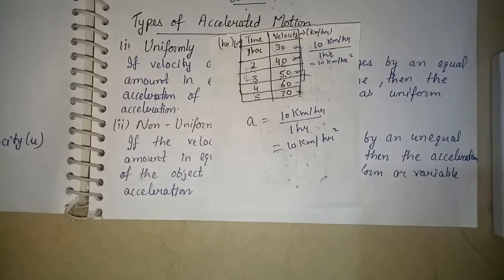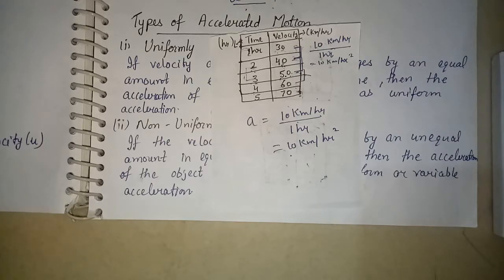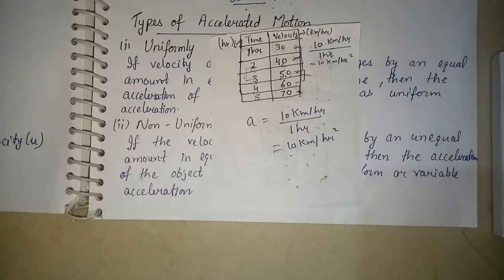So students, we have seen that this body is changing in velocity by an equal amount in equal time intervals. So the acceleration produced by the body is uniform — it is constant acceleration. So the motion of the body is what we call uniformly accelerated motion.